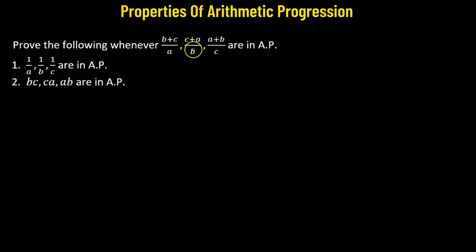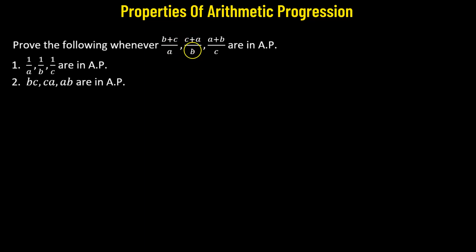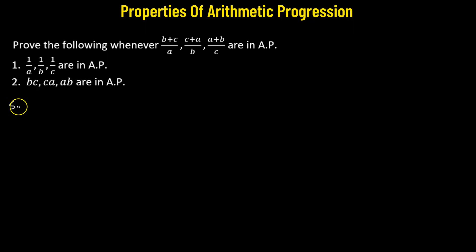This problem is given that we have three numbers: (b+c)/a, (c+a)/b, and (a+b)/c. These three numbers are in arithmetic progression. Using this, we need to show that 1/a, 1/b, and 1/c are in AP, as well as bc, ca, and ab are also in AP. So let's begin.